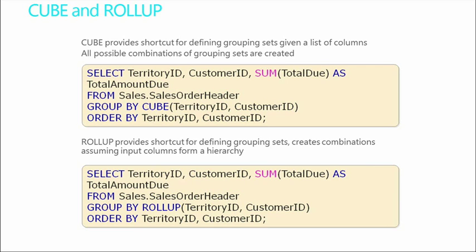Cubes and roll-up provide a shortcut for defining grouping sets. Cube creates all possible combinations of grouping sets. In this case we're doing a select territory ID and customer ID, a sum for total due, pinging the sales order header table, group by with the word cube in there — again territory ID and customer ID — then order by territory ID and customer ID. Roll-up is very similar in that it provides a shortcut for defining grouping sets, but creates combinations assuming input columns from a hierarchy — so it's more of a hierarchical approach than the cube.